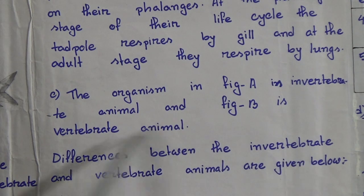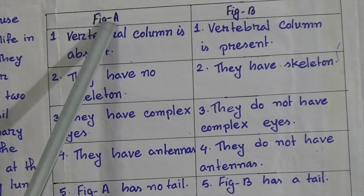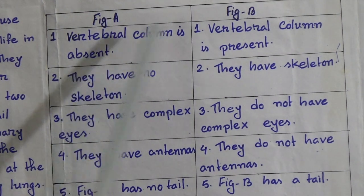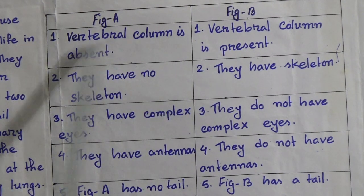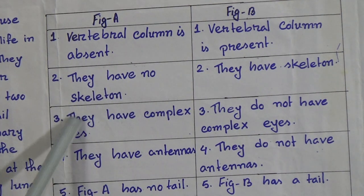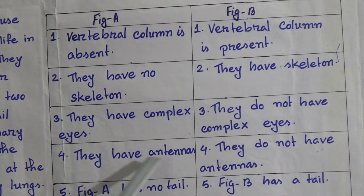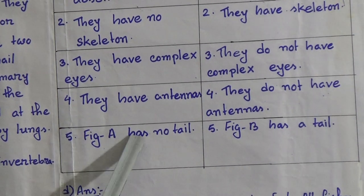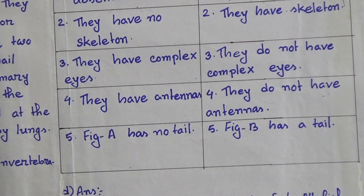You will make a differentiation table for the differences between invertebrate and vertebrate animals. Figure A is invertebrate and Figure B is vertebrate. Differences: (1) Vertebral column is absent in invertebrates; present in vertebrates. (2) Invertebrates have no skeleton; vertebrates have a skeleton. (3) Invertebrates have compound eyes; vertebrates do not have compound eyes. (4) Invertebrates have antennae; vertebrates do not have antennae. (5) Invertebrates have no tail; vertebrates have a tail.